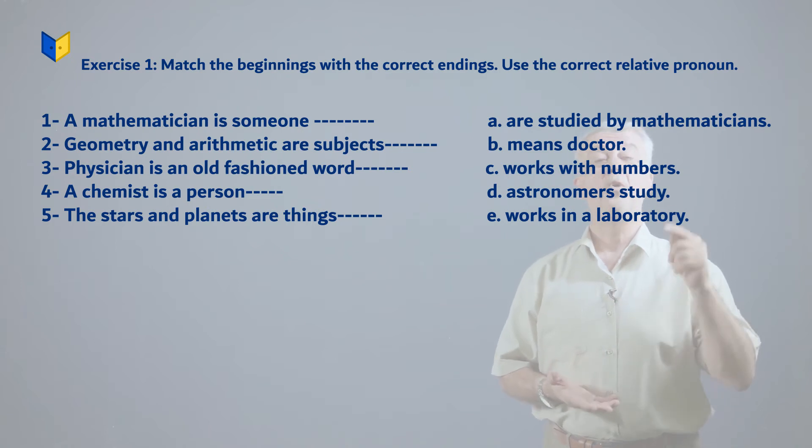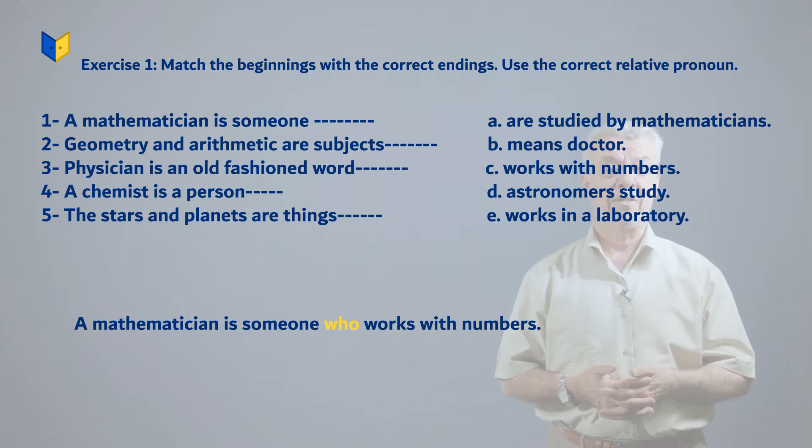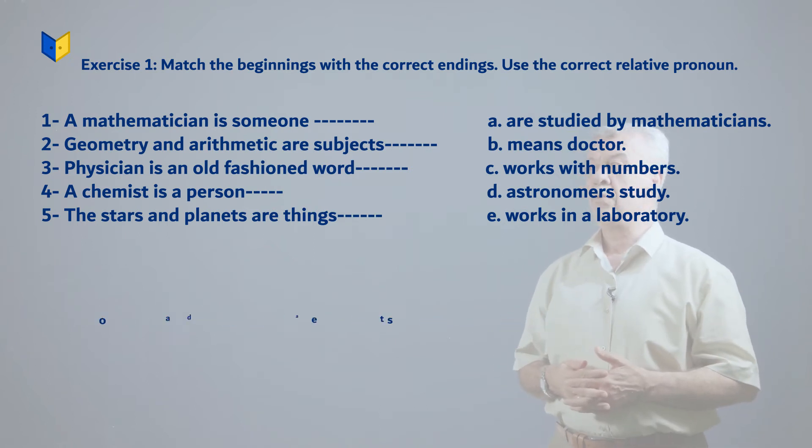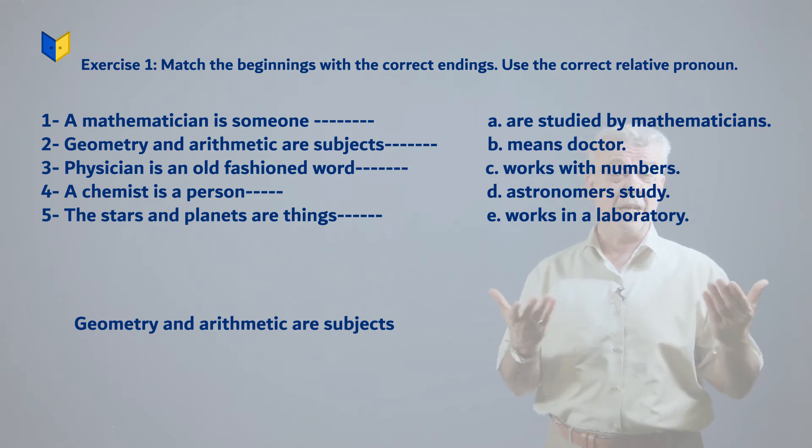C: works with numbers. A mathematician works with numbers. Number two: Geometry and arithmetic are subjects. Subjects means school subjects, so we say which or that. The answer is which or that, which are studied by mathematicians.